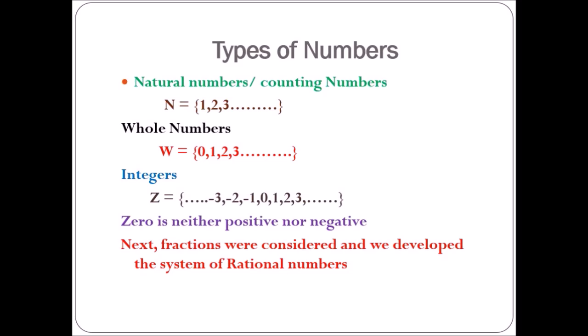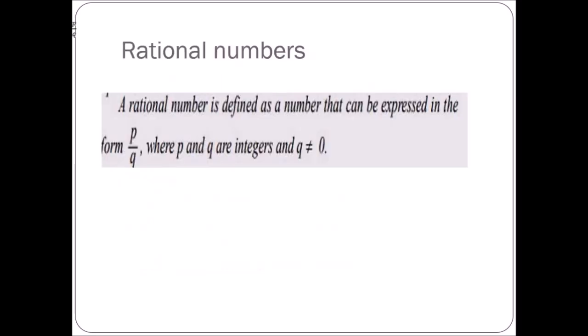Next, fractions were considered and we developed the system of rational numbers. So now we are going to see the next step of numbers, which is known as rational numbers. A rational number is defined as a number that can be expressed in the form P upon Q, where P and Q are integers and Q is not equal to zero.